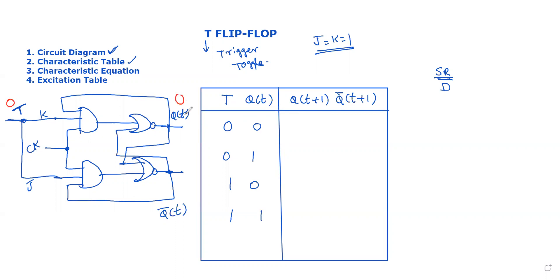The two inputs T and Q(t) give four cases: 0-0, 0-1, 1-0, 1-1. When T equals 0 and Q(t) equals 0, the output Q(t+1) equals 0 — same state. For T equals 0 and Q(t) equals 1, the output is 1 — again same state.